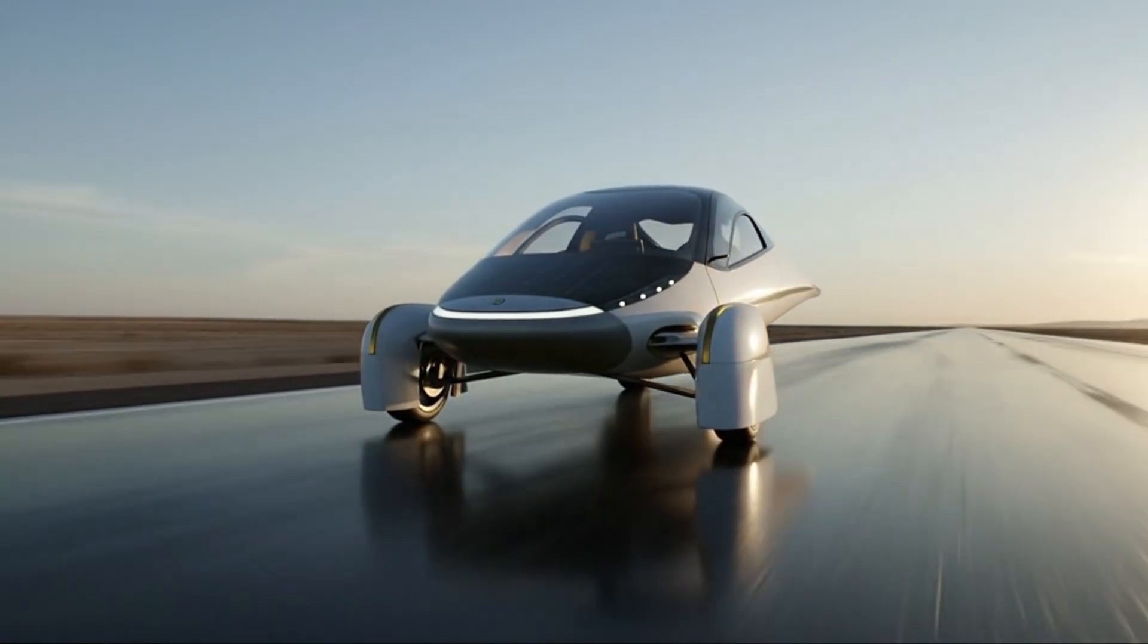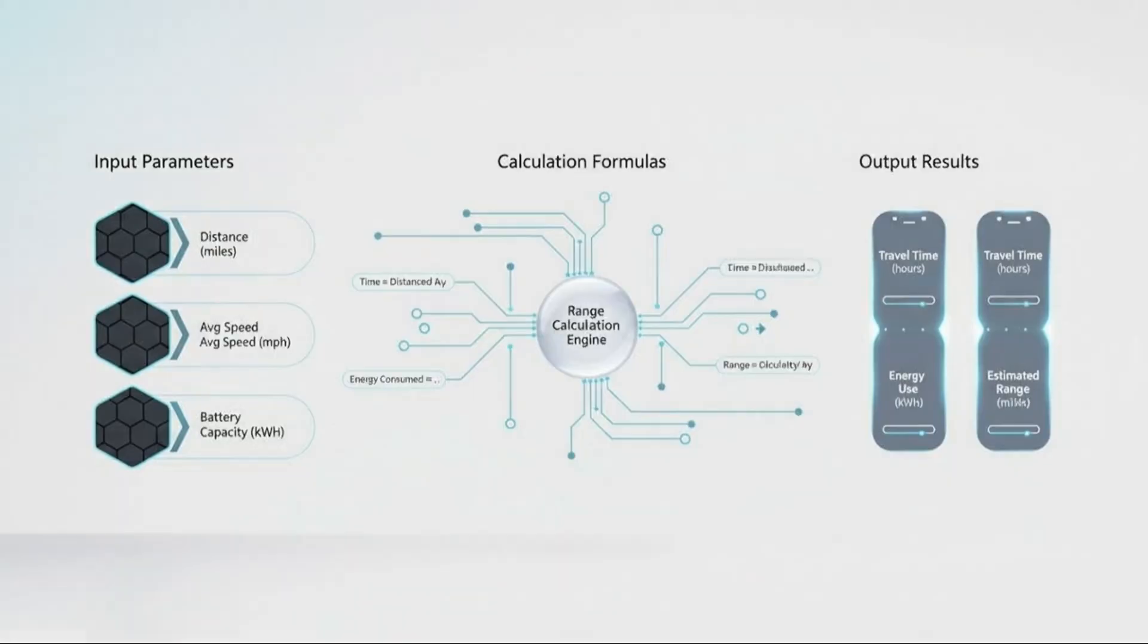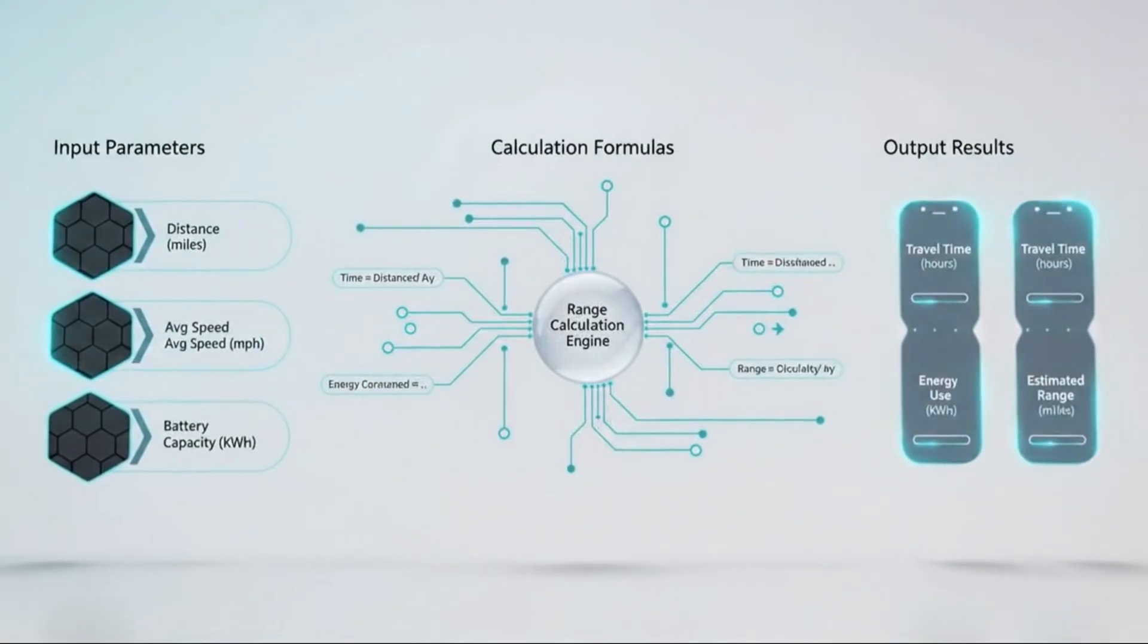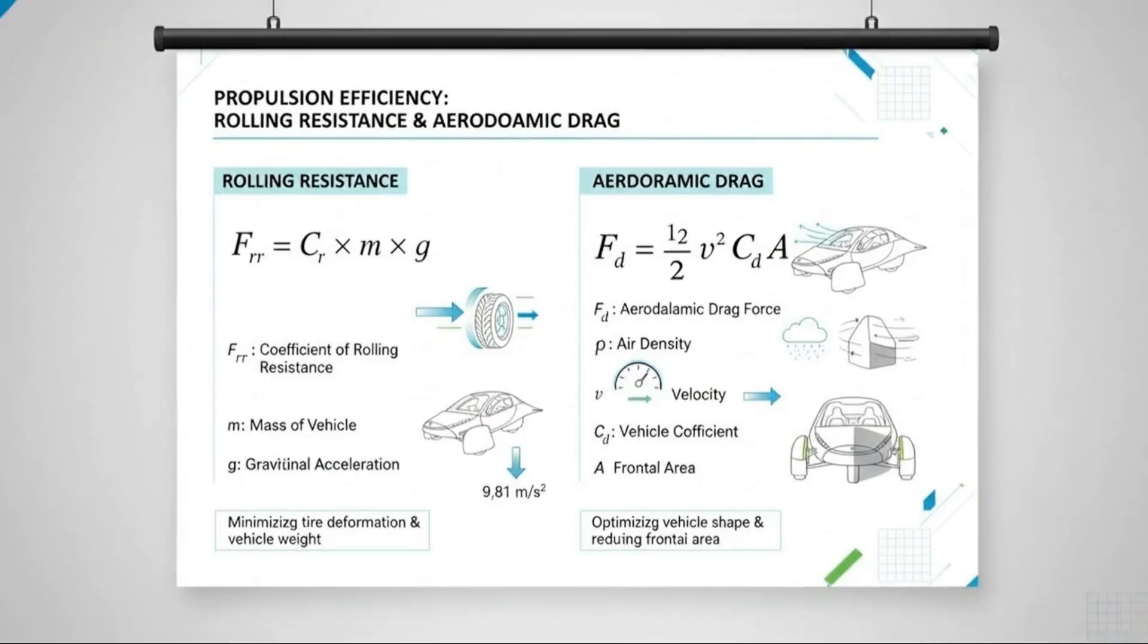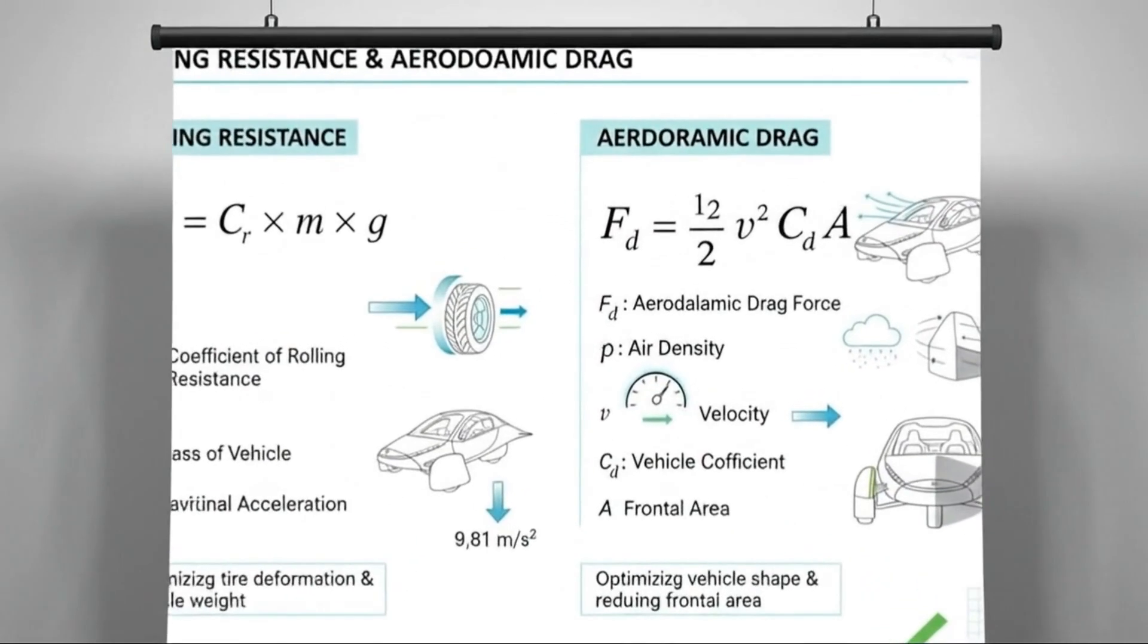For comparison, vehicles celebrated for aerodynamic excellence typically sit between 0.20 and 0.23. Reducing drag by even a few hundredths is considered an engineering victory. Aptera didn't shave hundredths, it rewrote the scale entirely.